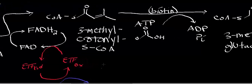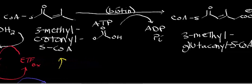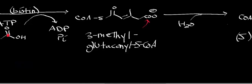Now we have 3-methylcrotonyl-S-CoA, and it's going to be carboxylated in a biotin-dependent reaction. We're specifically going to carboxylate this carbon here, so it's an ATP-dependent reaction because it's a biotin-dependent carboxylase. The carbon donor comes from bicarbonate — all biotin-ATP-dependent carboxylases use bicarbonate as the carbon donor. That's going to generate 3-methylglutaconyl-S-CoA.